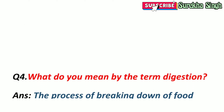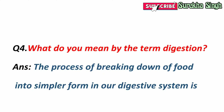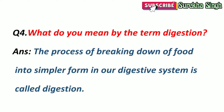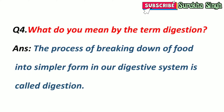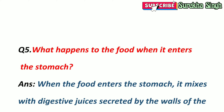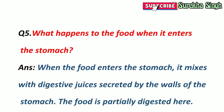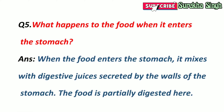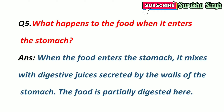4. What do you mean by the term digestion? The process of breaking down food into a simpler form in our digestive system is called digestion. 5. What happens to the food when it enters the stomach? When food enters the stomach, it mixes with digestive juices secreted by the walls of the stomach. The food is partially digested here.